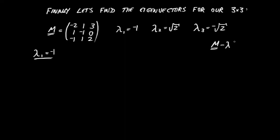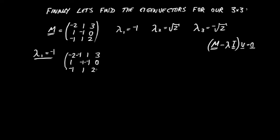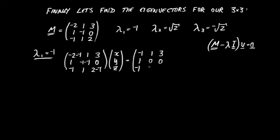We use the equation M minus lambda times the identity, multiplied by our vector, equals 0. We subtract off the diagonal: 1 minus minus 1, and then 1, 3, 1, minus 1 minus minus 1, and 0, minus 1, 1, and 2 minus minus 1, on x, y, and z. Simplifying the matrix: minus 1, 1, 3, 1, 0, 0, minus 1, 1, 3. Multiplied by our x, y, z eigenvector equals 0, 0, 0.